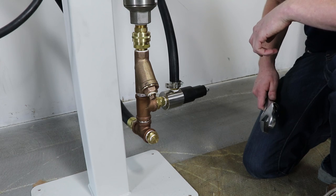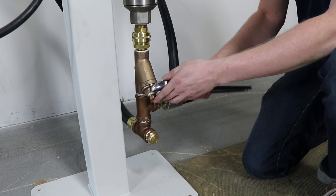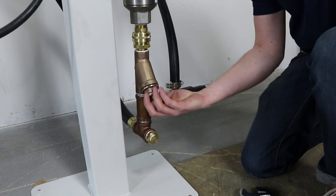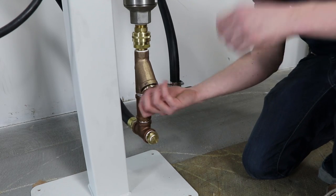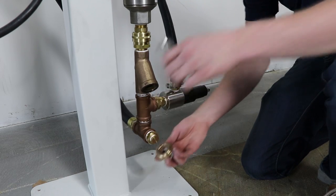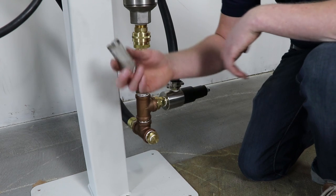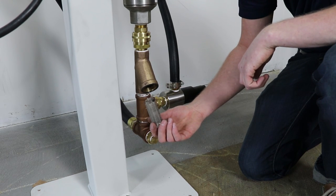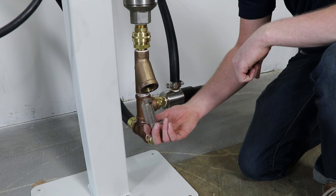Once residual pressure is bled use an adjustable wrench to remove the large Y-strainer cap. Once removed you can set aside and also remove the Y-strainer screen. There may be residual water that will bleed out as the cap is removed.